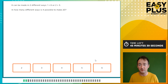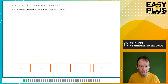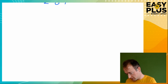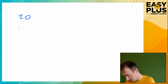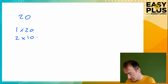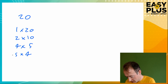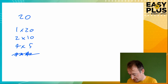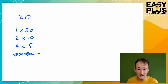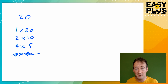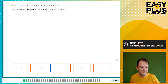Six can be made in two different ways: 1 times 6 or 2 times 3. In how many different ways is it possible to make 20? Let's be systematic. We can make 20 with 1 × 20, 2 × 10, and 4 × 5. We can't do 3 times anything since 3 doesn't divide 20. Note that 4 × 5 and 5 × 4 are the same thing. So there are only three options: 1 × 20, 2 × 10, and 4 × 5. The answer is 3.